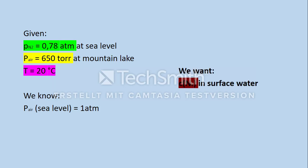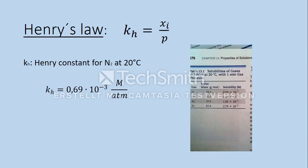We want to find out the concentration of nitrogen in the surface water. For that we can use Henry's law, because it says that the partial pressure of the gas over liquid is proportional to the gas concentration in the liquid.